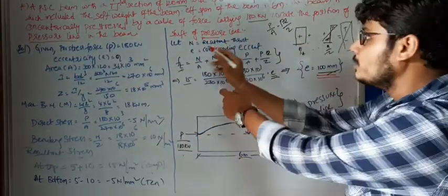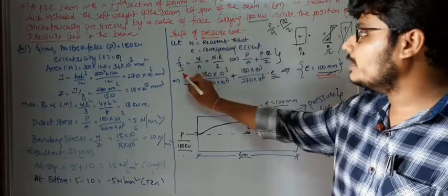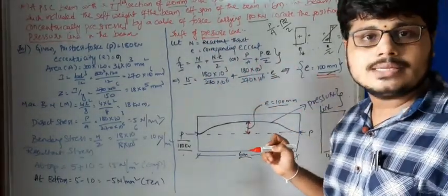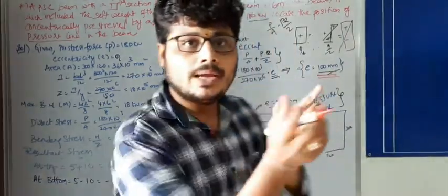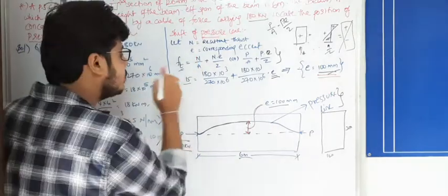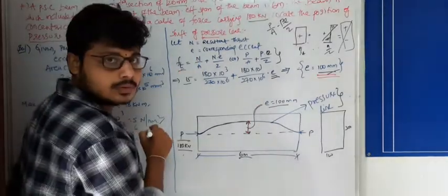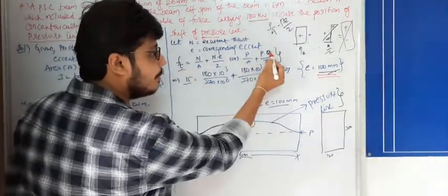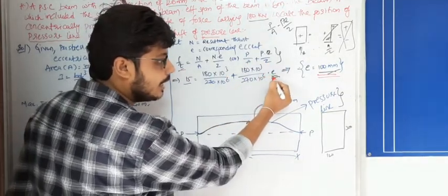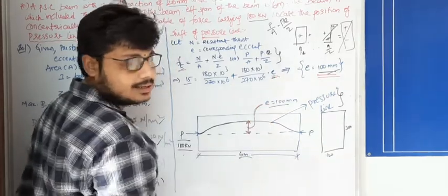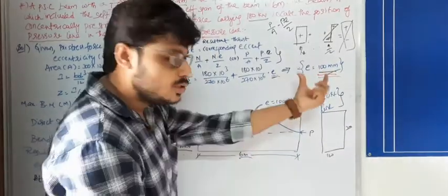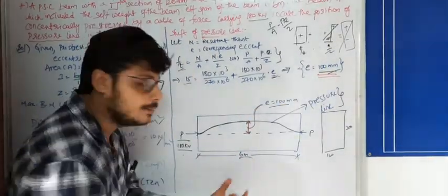The formula for the shift of the pressure line at the top fiber is: resultant stress σ_top equals P/A plus P·e/Z. Here, P is the prestress force, A is the cross-sectional area, e is the eccentricity, and Z is the section modulus. Solving this equation, we get the value of eccentricity as 100 mm.